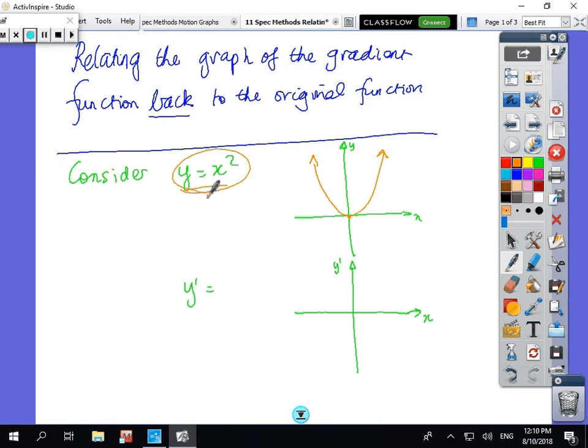Now if y equals x squared, then its derivative equals 2x. Think about what 2x looks like - it's a straight line going through the origin sloping up to the right.